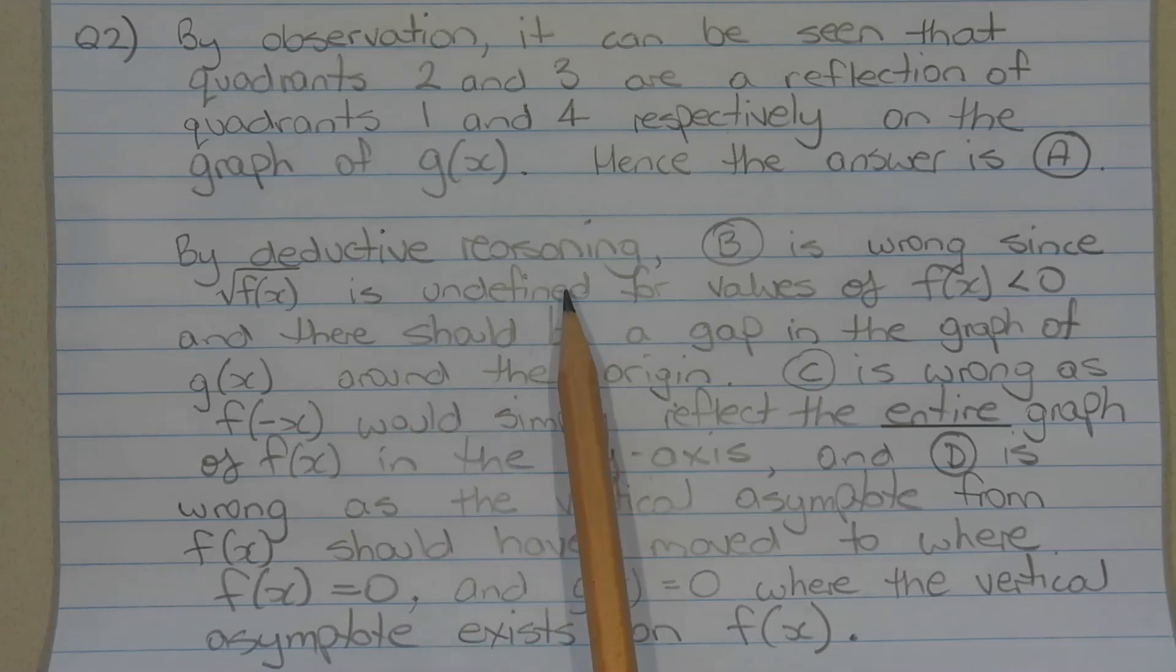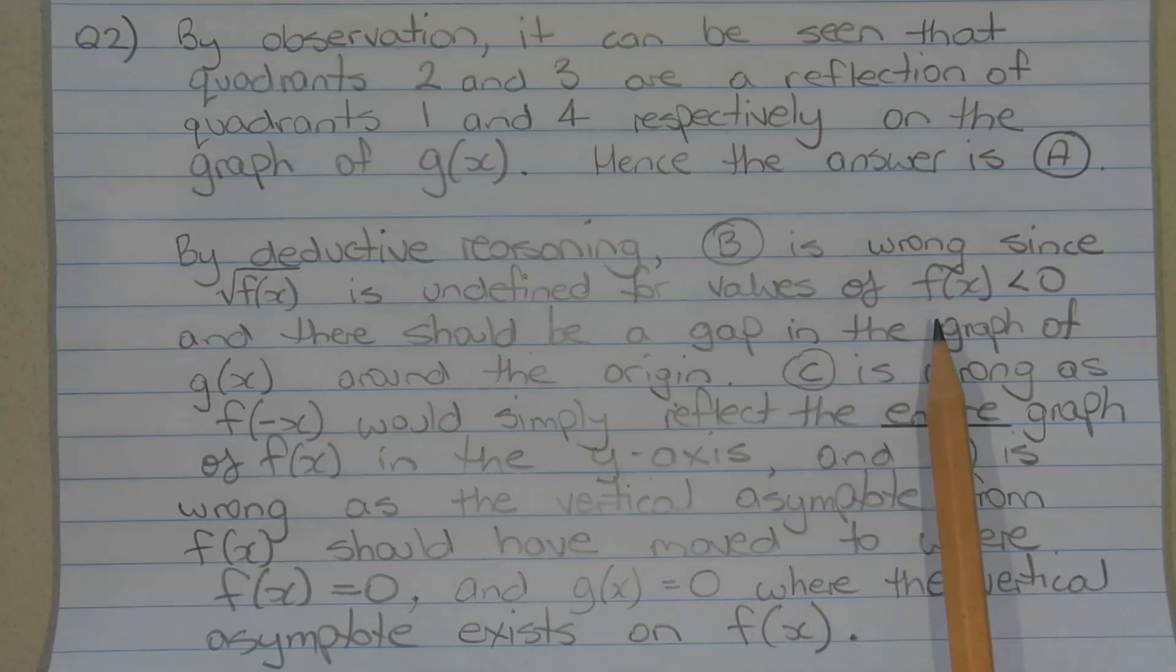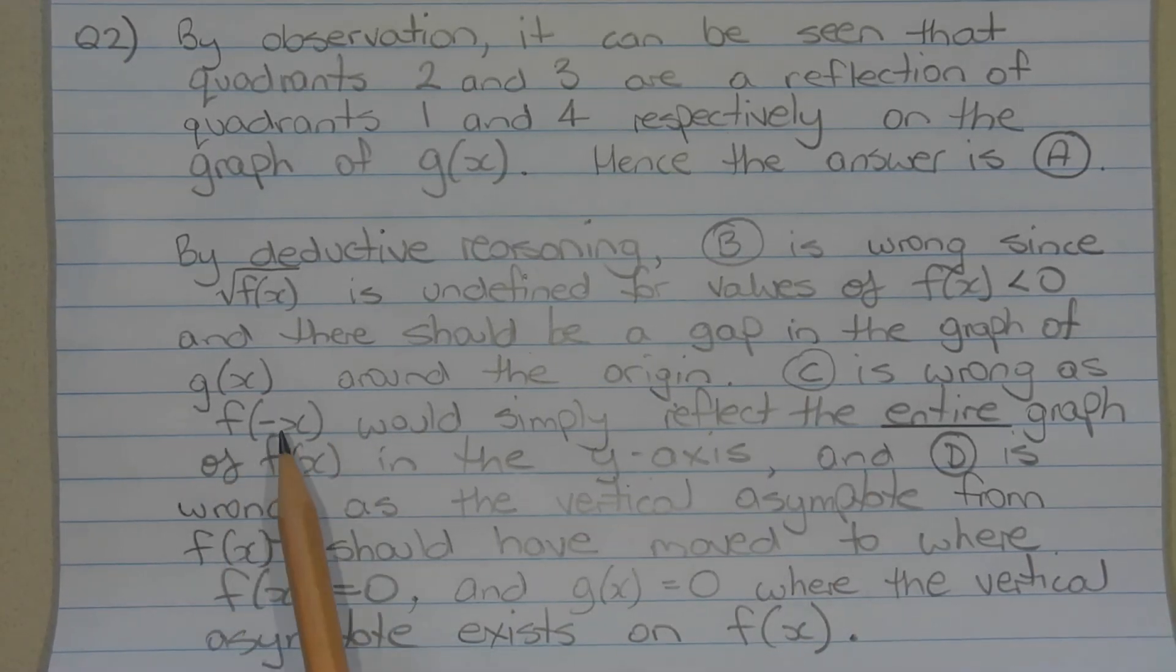By deductive reasoning, option B is wrong since the square root of f(x) is undefined for values of f(x) less than 0. In other words, any part of the graph of f(x) that's below the x-axis, there should be a gap in the graph of g(x) around the origin.